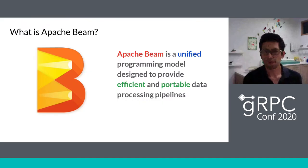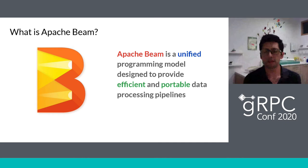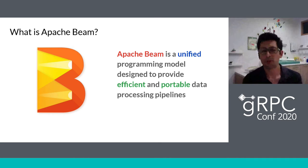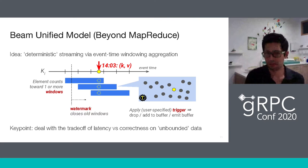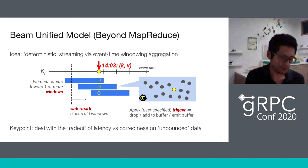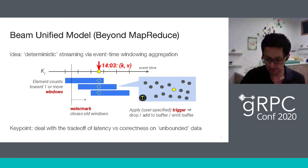When we talk about a unified model, we want to support both batch and streaming computations with the same model. The idea is to have deterministic streaming processing by assigning an event time to every element in the system. With this, we can define when to aggregate the data. If we don't want to wait too long, we can use triggers or define smaller time windows to deal with the trade-off of latency and correctness.